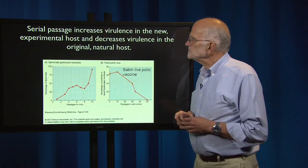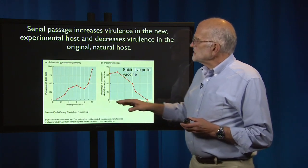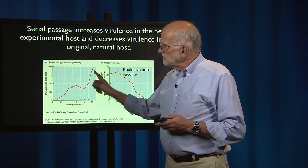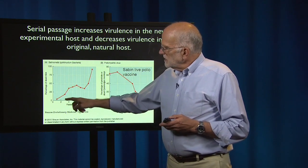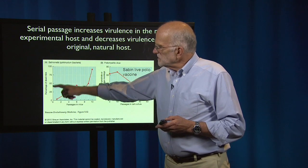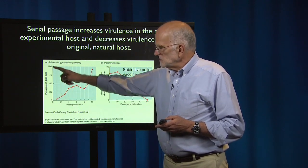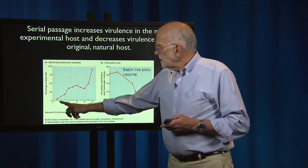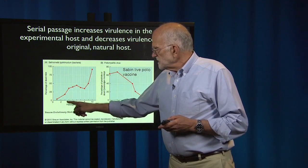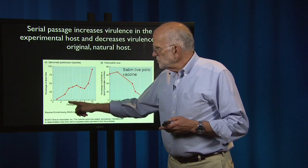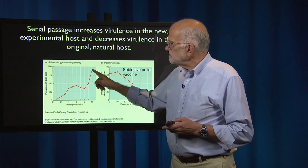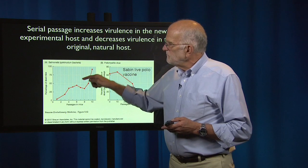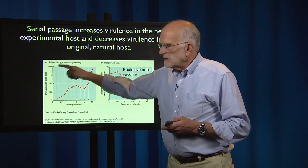Here is an example: Salmonella typhimurium, a bacterium, being passaged in mice. The graph shows the percentage of mice that die when infected after passages going 2, 4, 6, 8, 10. So 10 passages was enough to get Salmonella very good at killing mice.